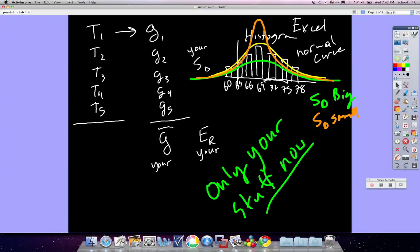So here you go. You want to make sure that you take each of your times, calculate your gravities, take the average of your gravities, and then make sure that you do an ER with the average. You'll also be doing a standard deviation for your own gravities.